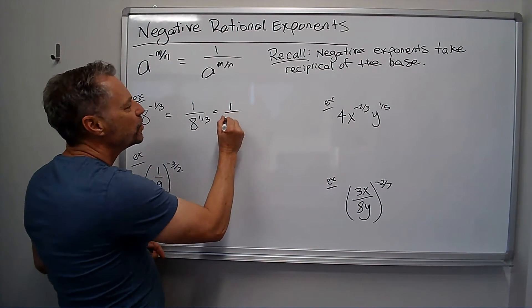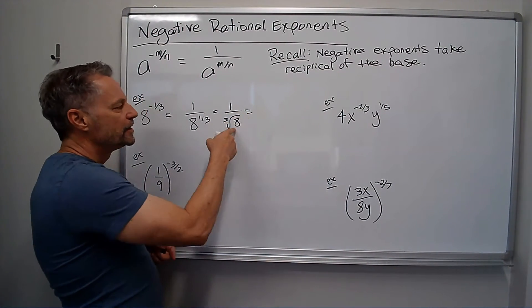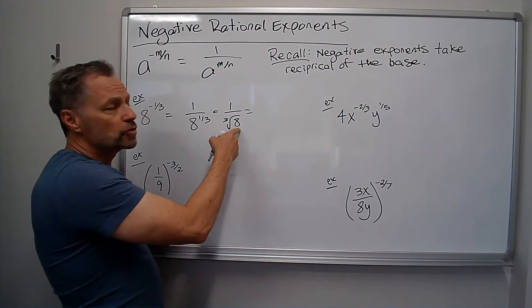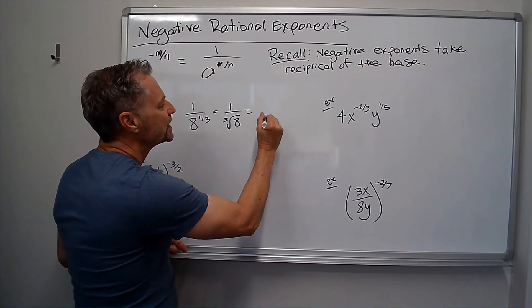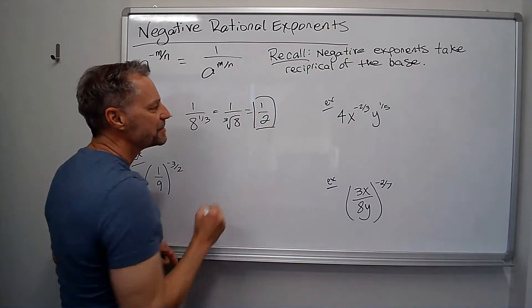This is essentially 1 over the 3rd root of 8, or the 3rd root of 8 is 2, 2 to the 3rd. So I get 1 over 2, and that's my answer.